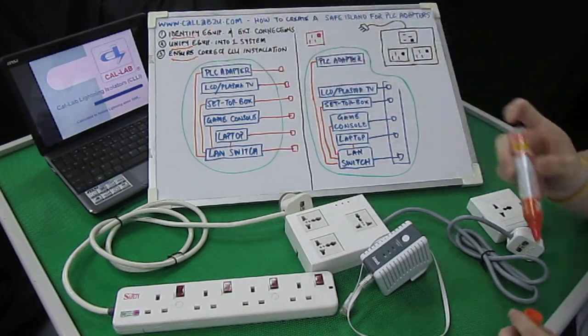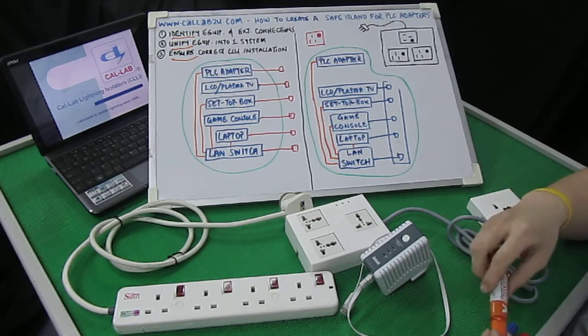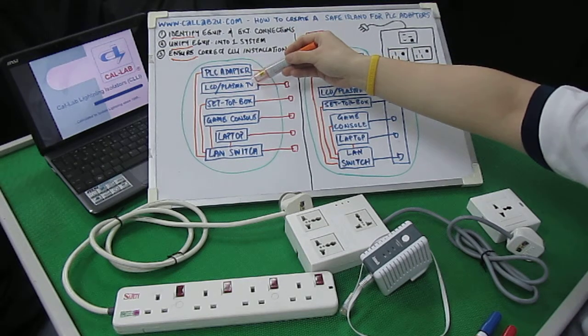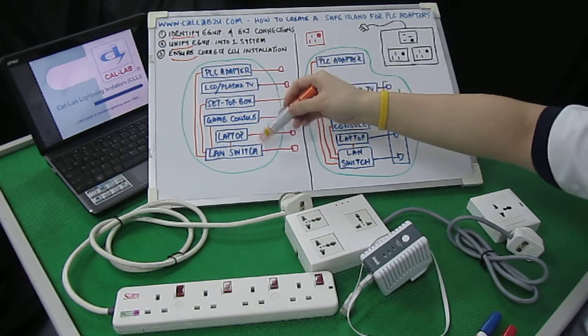Now let's take a look at the typical PLC adapter setup. In a typical PLC adapter, you'd obviously have the PLC adapter, perhaps a plasma or LCD TV, setup box, game console, laptop, and perhaps a LAN switch as well.